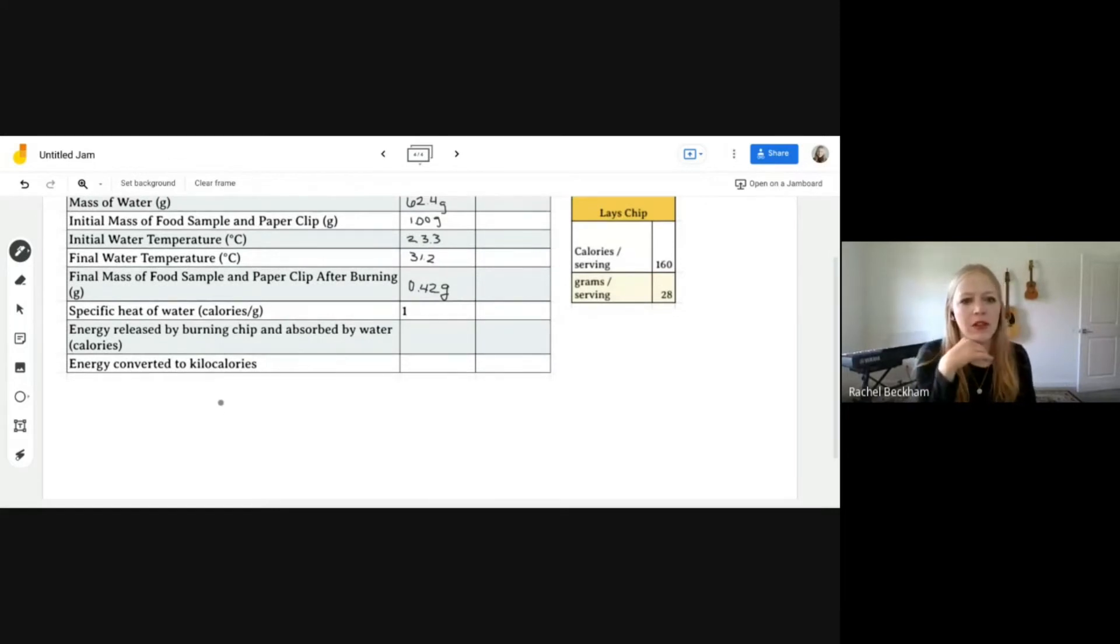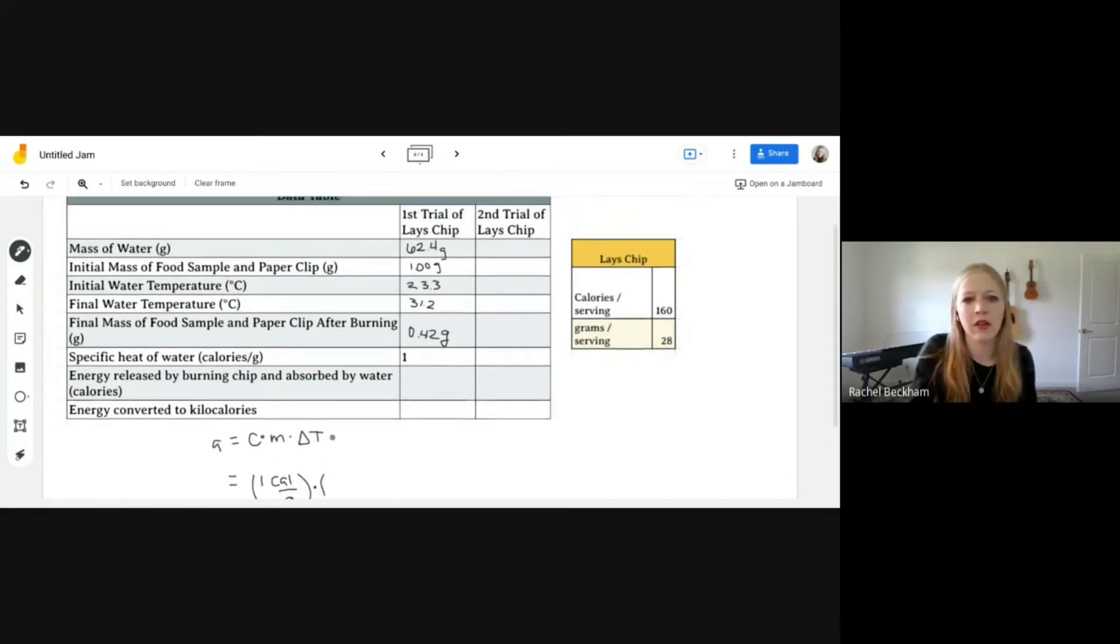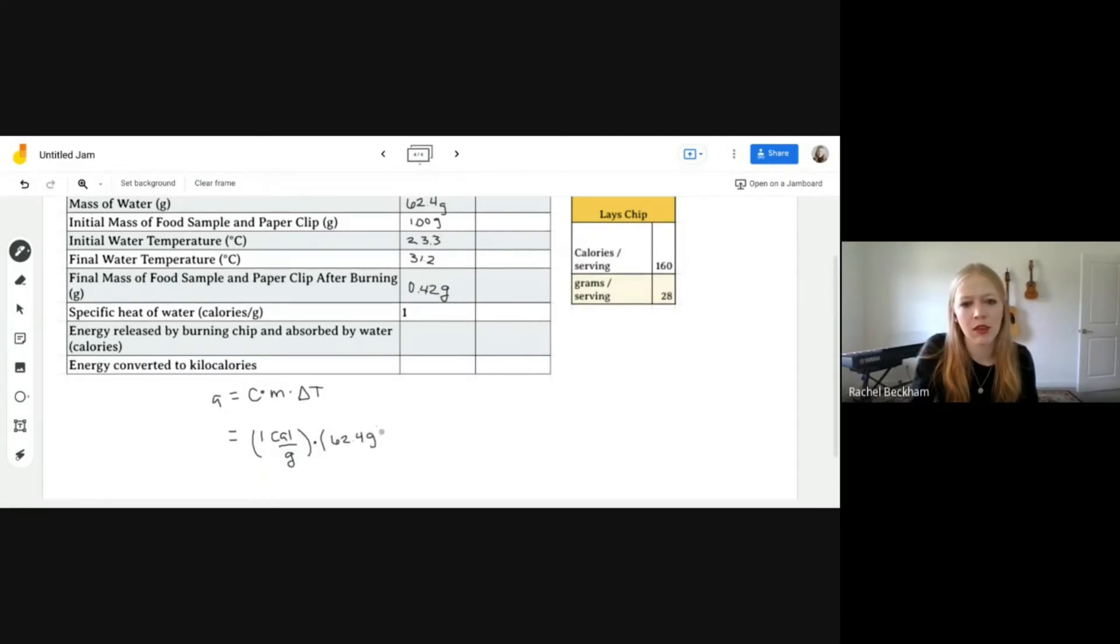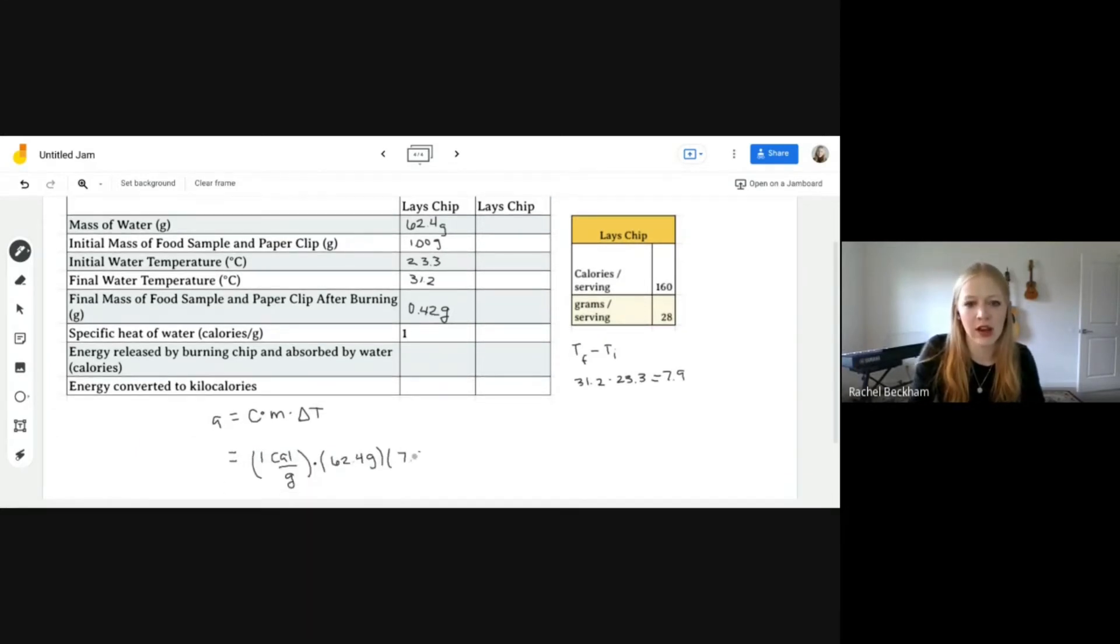Now we're going to calculate the energy that was released by burning the chip. So we are going to use the equation Q equals C times M times delta T. And we're going to put in all of our units along with it. So our C stands for specific heat. And the specific heat of water is one calorie per gram. The mass of the water was 62.4 grams. So for the change in temperature, we need to take the final temperature and subtract the initial temperature from it. So we need to do 31.2 minus 23.3. 31.2 minus 23.3 is 7.9. That's how much the temperature changed. So 7.9 degrees right there.